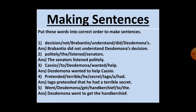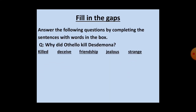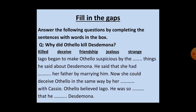The fifth sentence: 'when Desdemona get handkerchief to the' — correct order: when Desdemona went to get the handkerchief. Now I move towards the Fill in the Gaps activity. You are given a paragraph with blanks and a set of words to fill them. Iago began to make Othello suspicious by the strange things he said about Desdemona. He said that she had deceived her father by marrying Othello, and now she could deceive Othello in the same way through her friendship with Cassio. Othello believed Iago and became so jealous that he killed Desdemona.